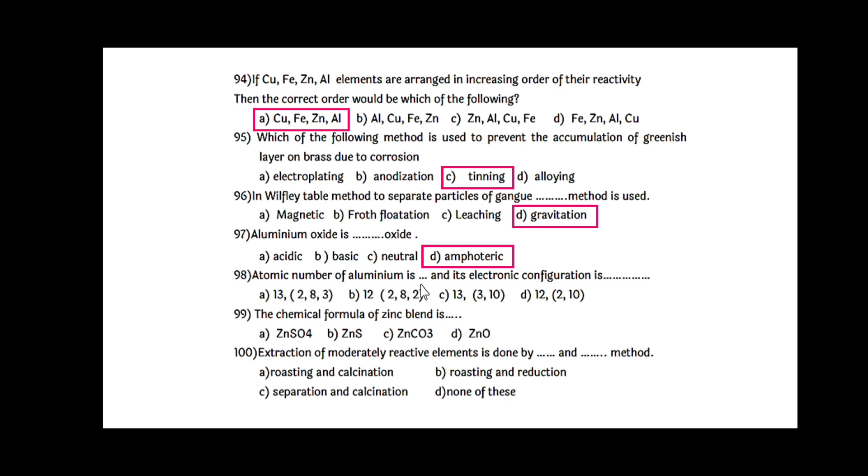Atomic number of aluminum is 13 and its electron configuration is 2, 8, 3. The first option is correct. The chemical formula for zinc blend is ZnS. Extraction of moderately reactive elements is done by roasting and calcination method.